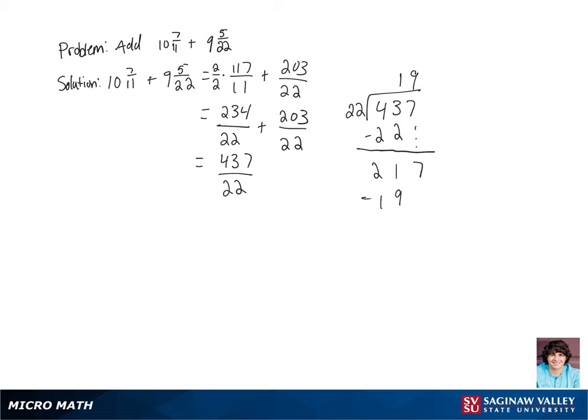22 goes into 217 nine times. 9 times 22 is 198. Subtract that from 217. We get a remainder of 19. So our final answer is going to be 19 and 19 22nds.